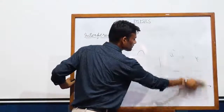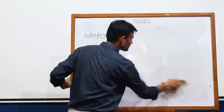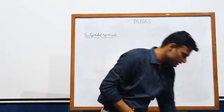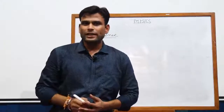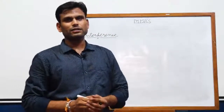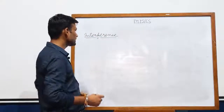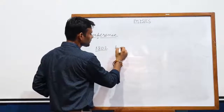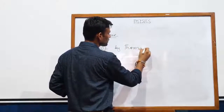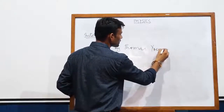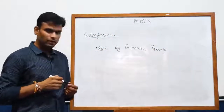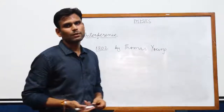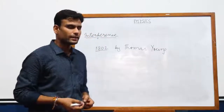This phenomenon of interference was successfully explained in the very famous experiment, Young's Double Slit Experiment, by Thomas Young in 1802. Before proceeding with this experiment, we should understand some basic terminologies which we will study during this unit.